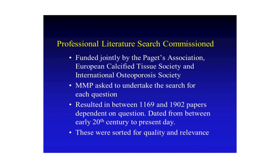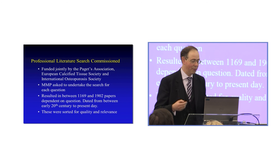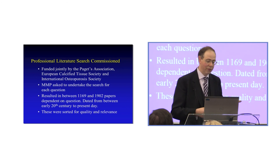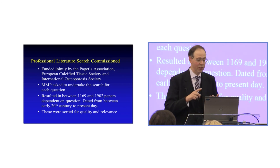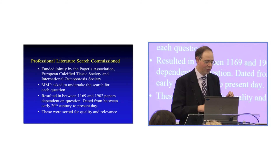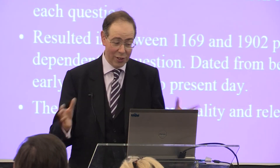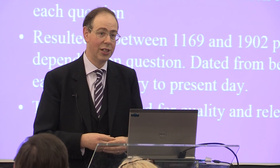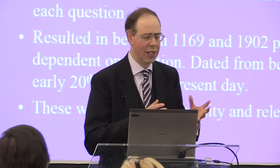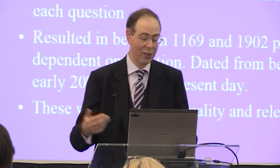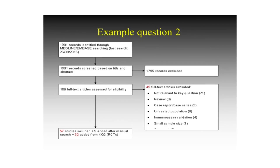A literature search is very time consuming. We made a decision to get a professional body — a company called IMP — to do that for us. We were very lucky to get joint funding from the Paget's Association, European Calcified Tissue Society, International Osteoporosis Foundation, and IMP, who undertook the research for us. For each question they identified a hefty number of papers — between 1,100 and 1,900 papers to go through — dating all the way back to the early 20th century.